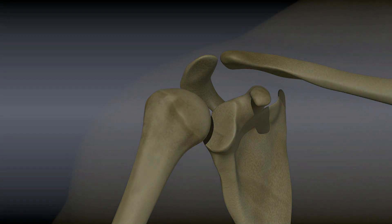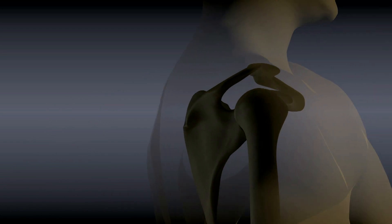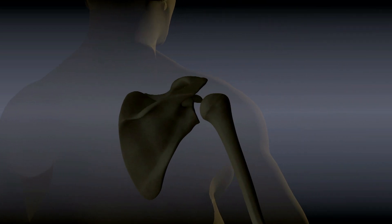This is where the rotator cuff usually becomes inflamed or torn. Injecting a corticosteroid, often called cortisone, into this space can reduce inflammation and relieve shoulder pain. It can also help to confirm that shoulder pain is coming from the rotator cuff.